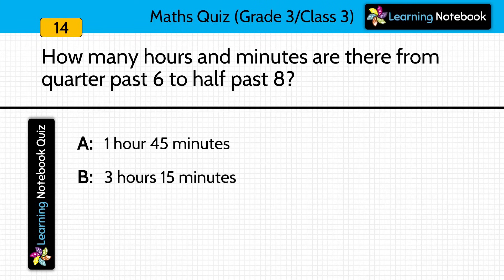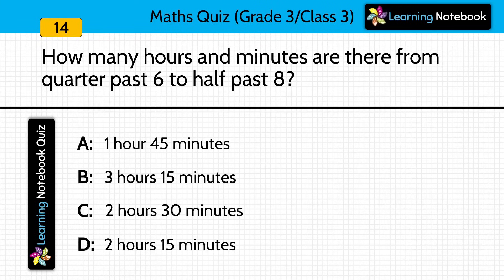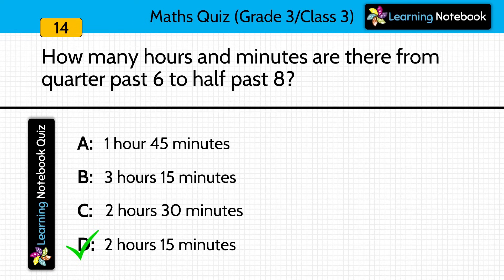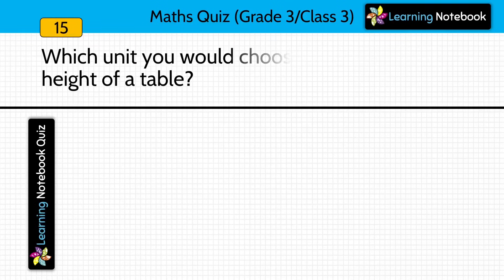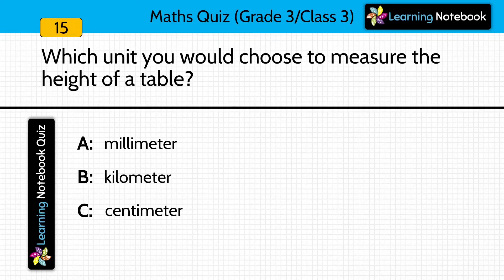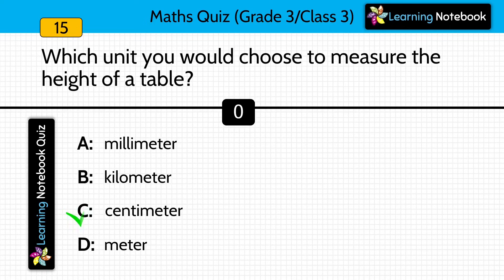Question fourteen: how many hours and minutes are there from quarter past six to half past eight? Quarter past six means 6:15 and half past eight means 8:30, so we have to calculate the hours and minutes from 6:15 to 8:30.